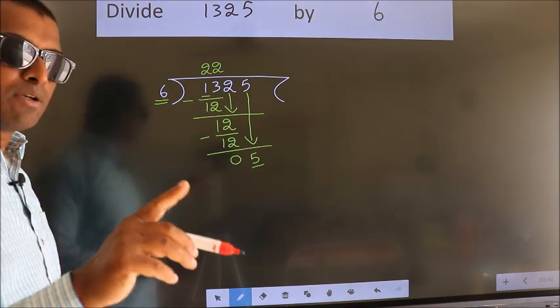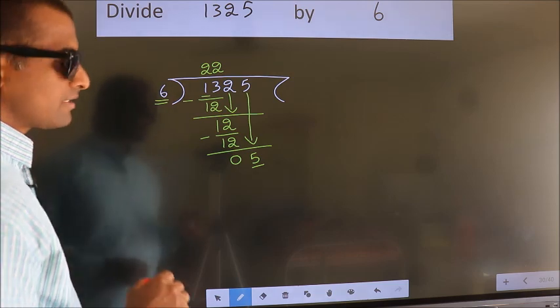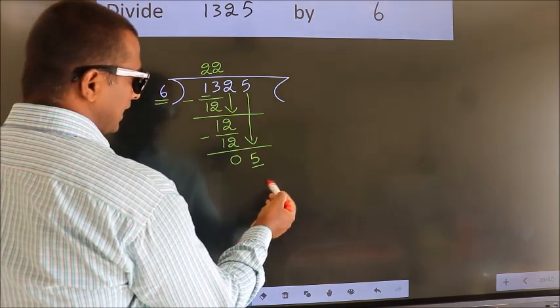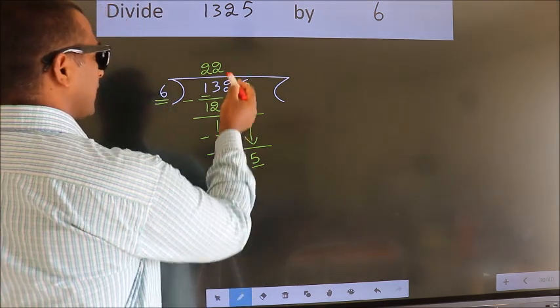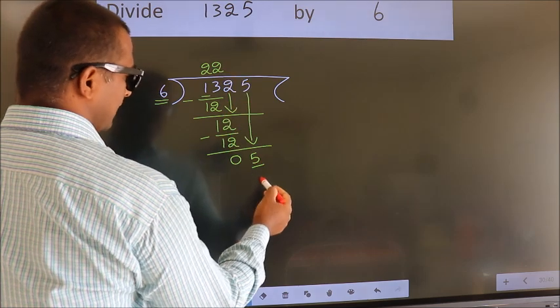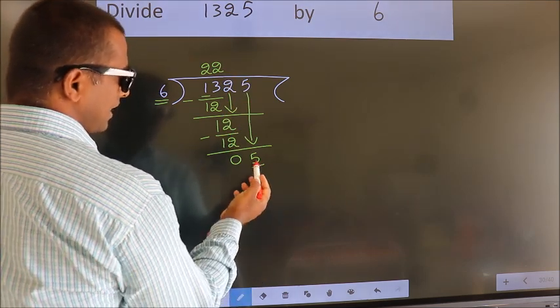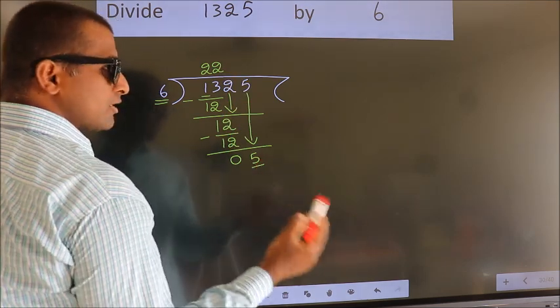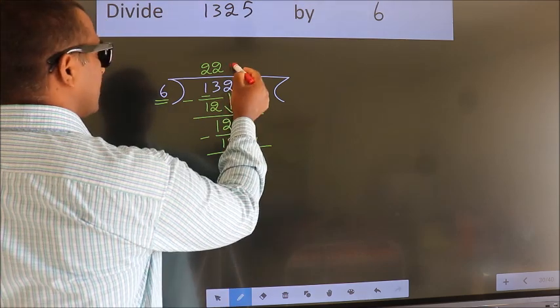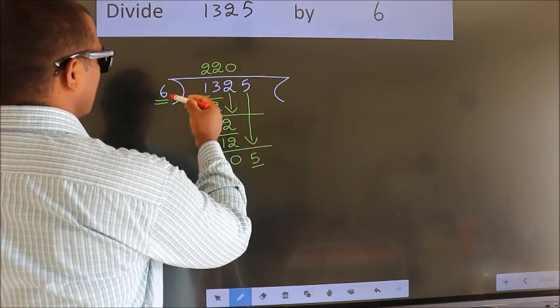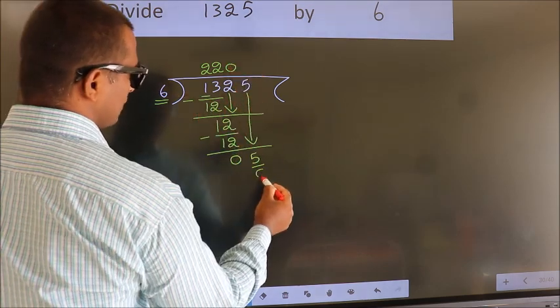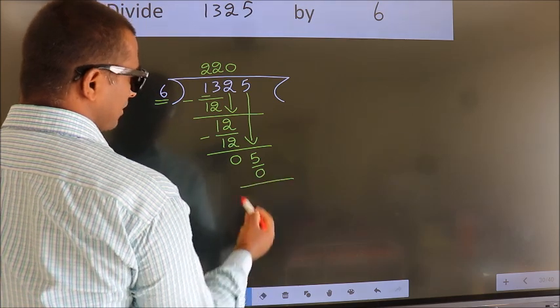Instead of that, what we should think of doing is which number should we take here? If I write 1, we get 6. But 6 is larger than 5. So what we do is we take 0 here. So 6 into 0 is 0. Now we subtract.